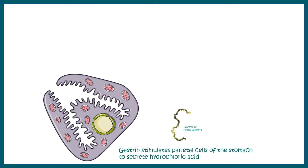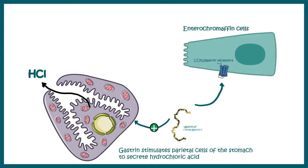Now let us look at a particular parietal cell and see what gastrin does. Gastrin directly stimulates the parietal cell of the stomach to secrete hydrochloric acid. It can also indirectly work on enterochromaffin-like cells, where CCK2 or gastrin receptors bind to gastrin-17 or mini gastrin, ultimately leading to secretion of histamine. Histamine receptors are also present on the parietal cell, so histamine indirectly stimulates the parietal cell to secrete further HCL. In summary, gastrin can directly stimulate the parietal cell or aid in histamine production to indirectly stimulate gastric HCL secretion.